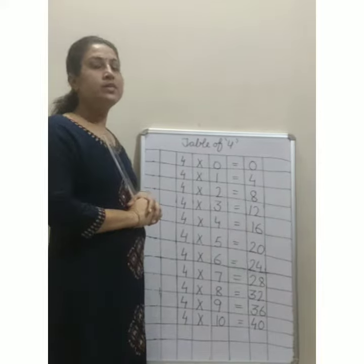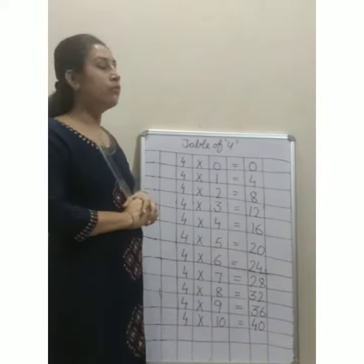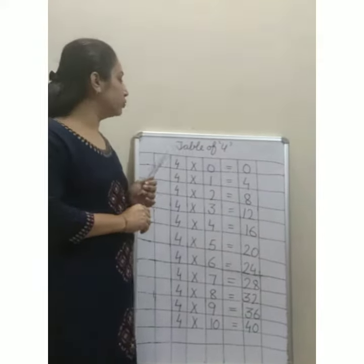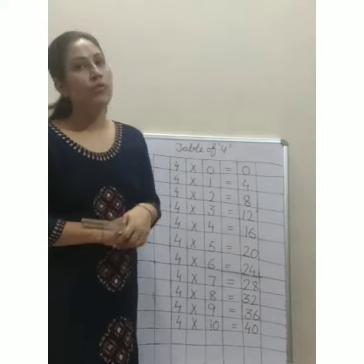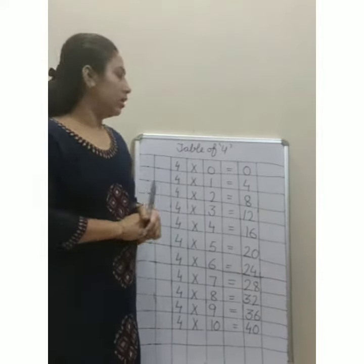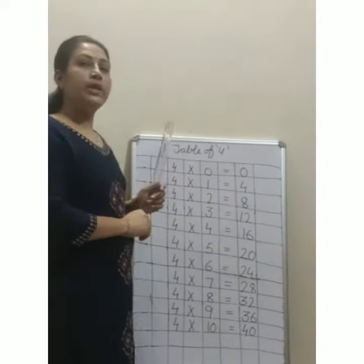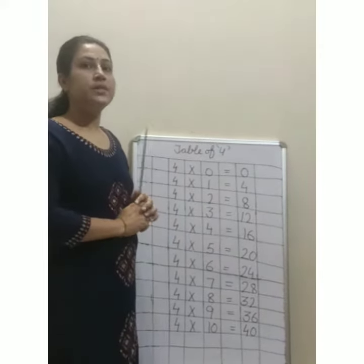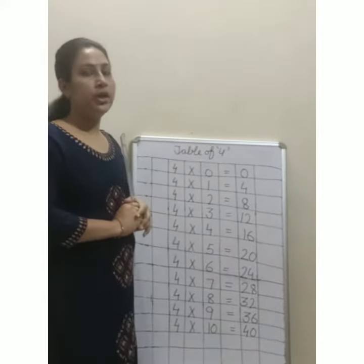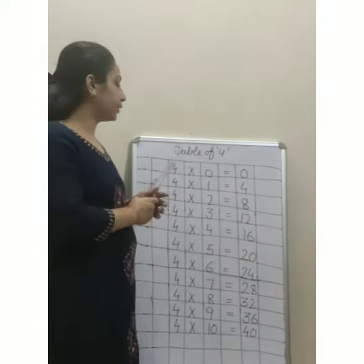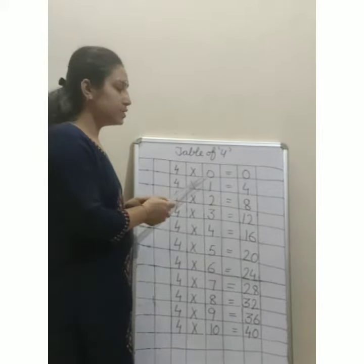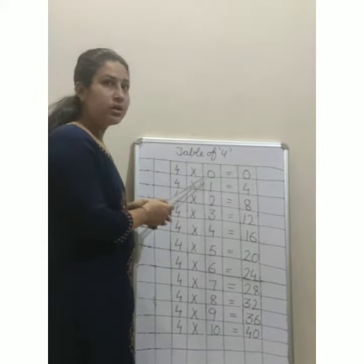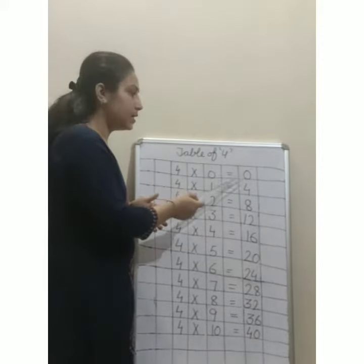Dear kids, now we will do table of 4. Look at the board and listen carefully. 4 zeros are 0.